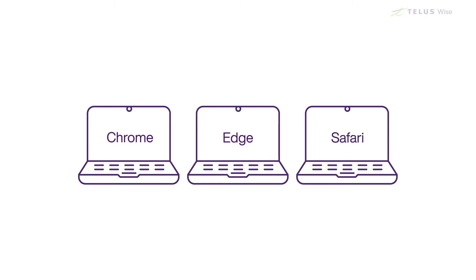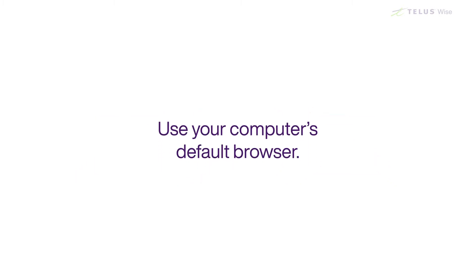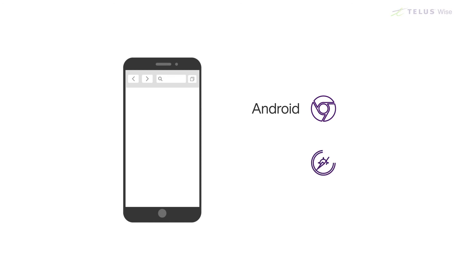It's easiest to start out using the browser that comes with your computer. Phones and tablets also have browsers built in — Chrome for Android devices and Safari for Apple devices. You can use the browser to visit websites just as you would on your laptop or desktop.